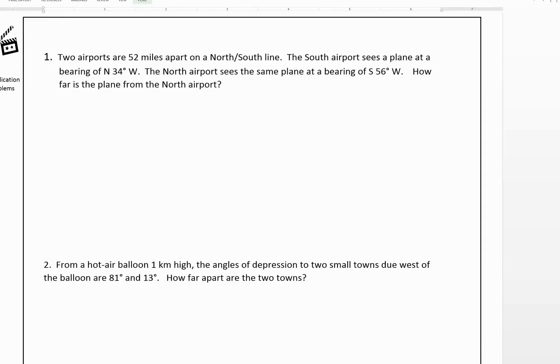Now we're going to work through two application problems. This first one says two airports are 52 miles apart on a north-south line. The south airport sees a plane at a bearing of north 34 degrees west. The north airport sees the same plane at a bearing of south 56 degrees west. How far is the plane from the north airport?